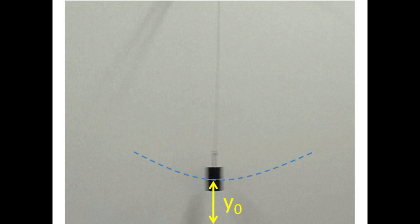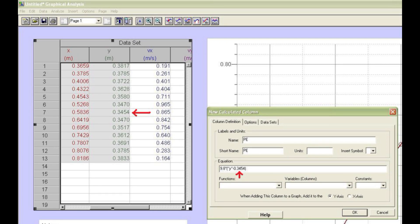We will compute the potential energy per unit mass relative to the low point in the pendulum swing. This equilibrium height will be called y0. Y0 is easily picked out of the y column of the table, and is used as a numerical value in the calculation of the potential energy column. The definition of the potential energy per unit mass will then be 9.8 times the quantity y minus y0.